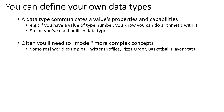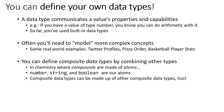Often though we'll need to model more complex ideas. For example, if we wanted to model the idea of a Twitter profile, a pizza order, or basketball player stats, we need some additional capabilities in order to do so. We can define what we call composite data types by combining some other types into a single composite type. Kind of like in chemistry where you can make a compound out of atoms, we can take our primitive types and compose them together into a composite data type.